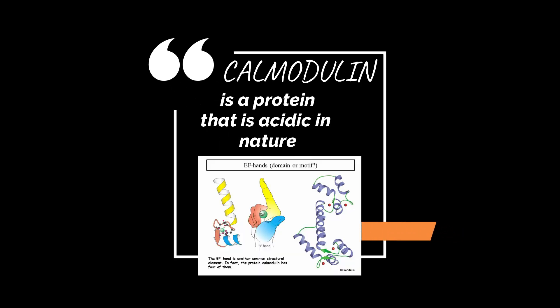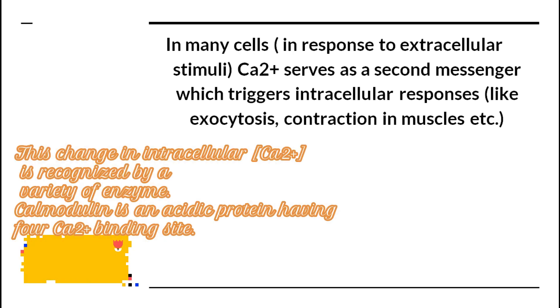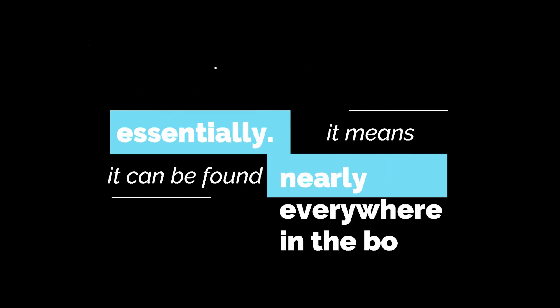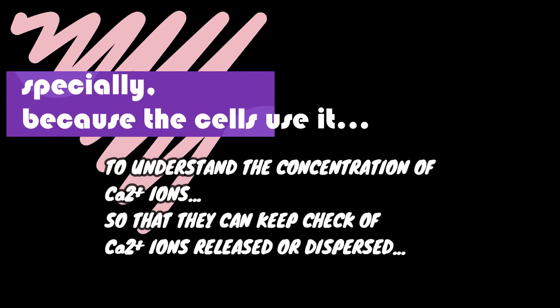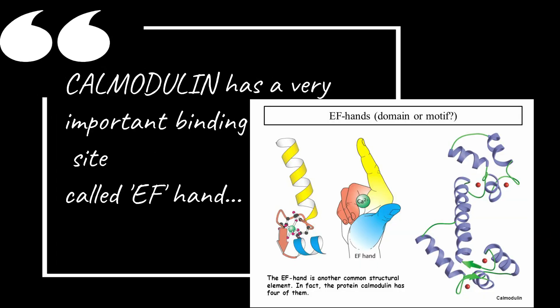Calmodulin is a protein which is acidic in nature. In many cells, calcium serves as a very important second messenger which triggers intracellular responses. This change in intracellular response is recognized by many enzymes, but the most important of them is the calmodulin protein. Calmodulin can be called a ubiquitous molecule, meaning it can be found abundantly in the body. The cell uses it to understand the calcium concentration within the cell, so it can keep a check on the amount of calcium ions released or dispersed.